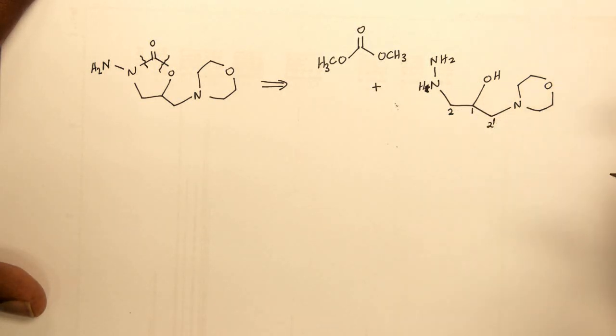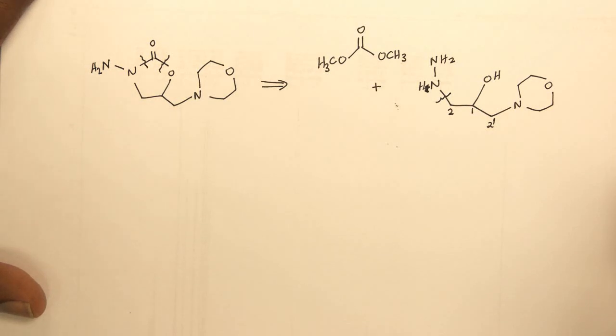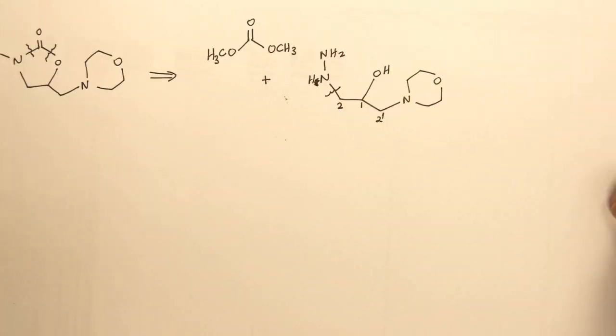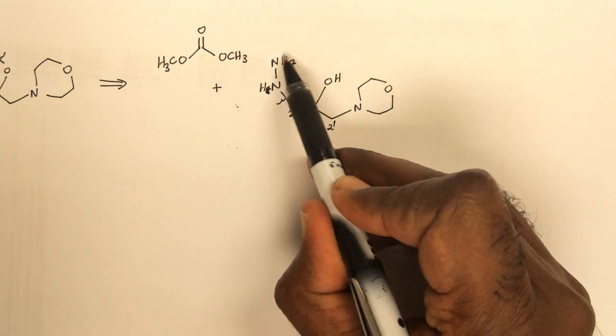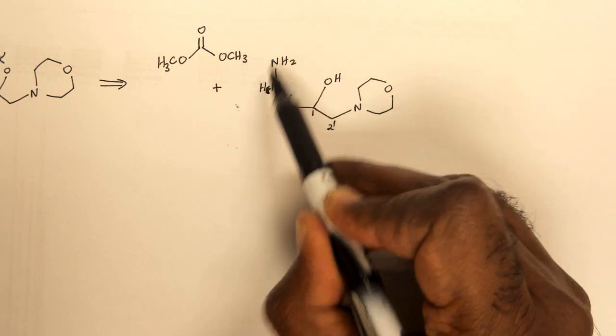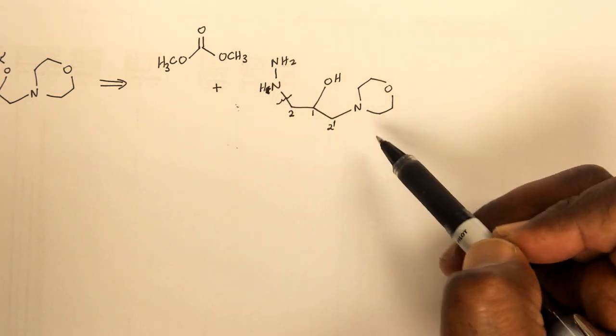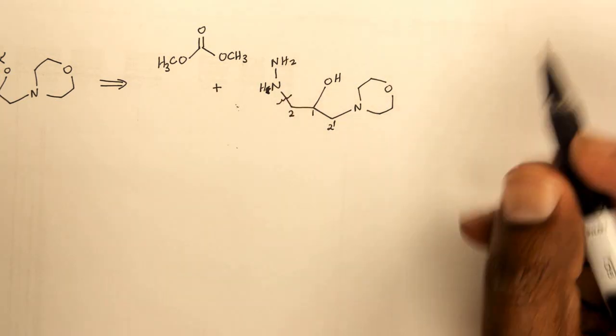I would rather choose this first because remember one of our aims is to disconnect the most reactive parts of the molecule first. If I had to look at the two, because of this amino group that we have in here, this would make this hydrazine moiety much more reactive than this morpholine moiety. So I would choose to disconnect that first.